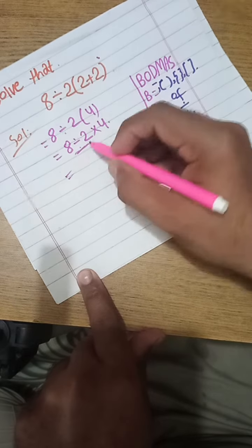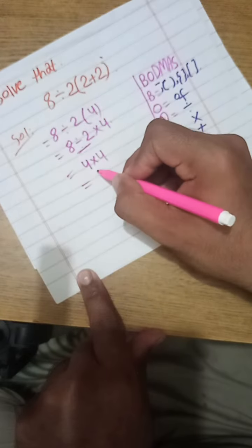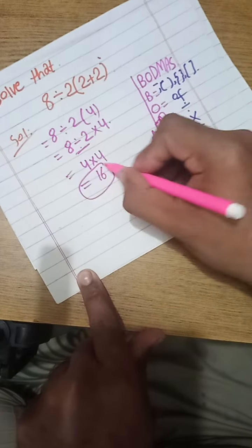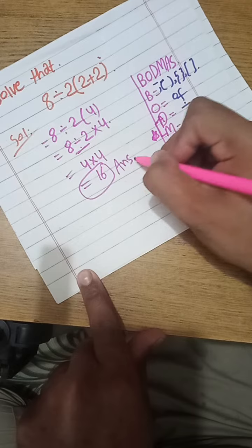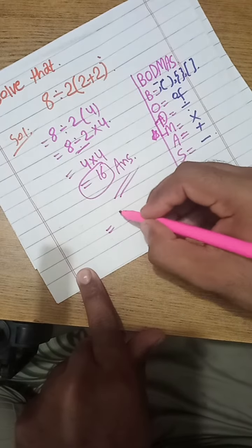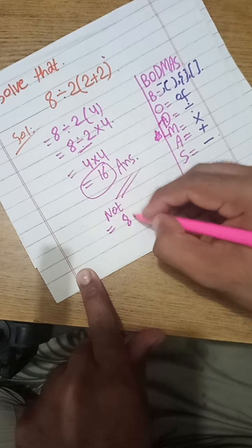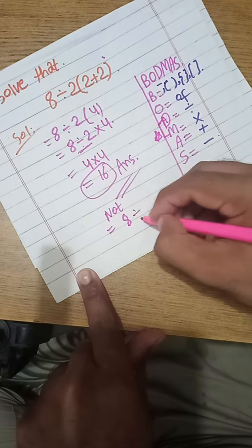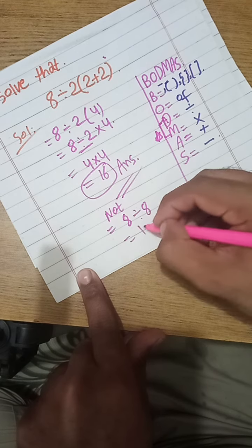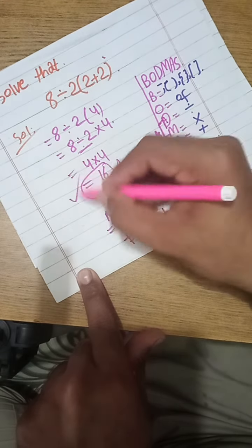Which gives 4, 4 multiply by 4 equals 16. 16 is our correct answer. 16 is our correct answer. Note: we divide, note, 8 divided by 8 which gives 1 is incorrect. Note: the correct answer is 16.